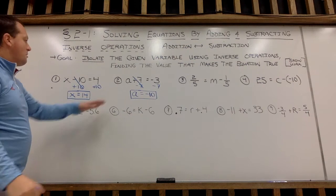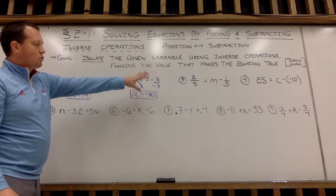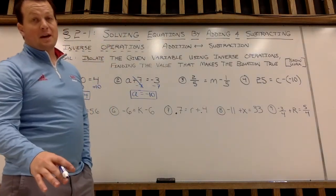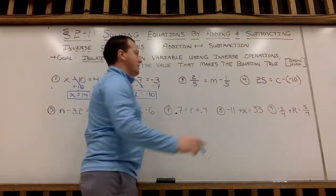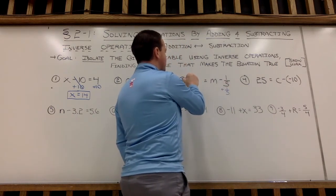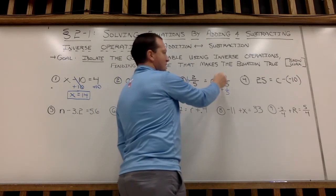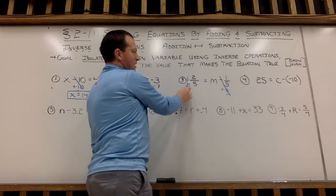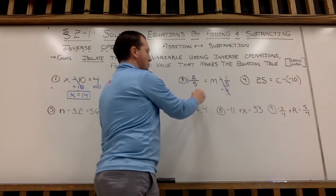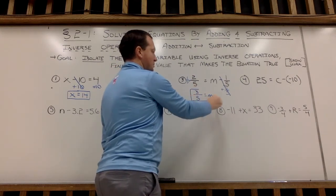That's all I'm looking for in terms of work: putting down the original equation, showing your inverse operations, isolating the variable. Example 3, we've got the f-word — fraction, yes, that f-word. We're going to add 1 fifth to both sides to undo subtracting 1 fifth from m. So 1 fifth and 2 fifths — nice thing here, we have a common denominator. So 1 plus 2 is 3 fifths, which will be my m variable value.